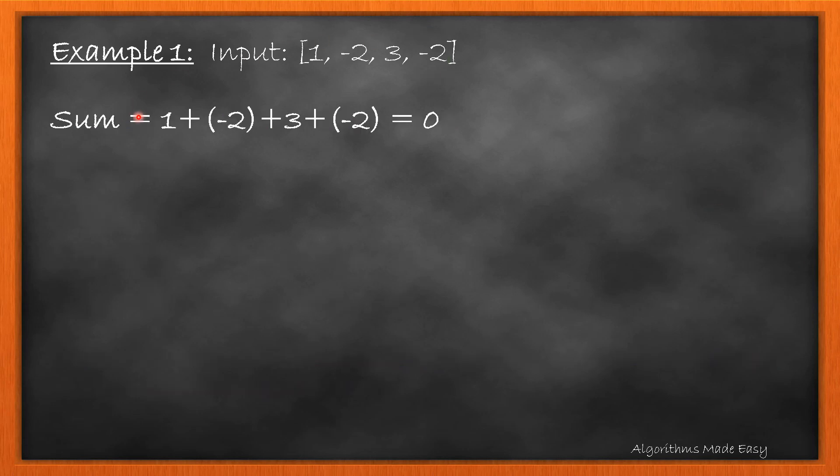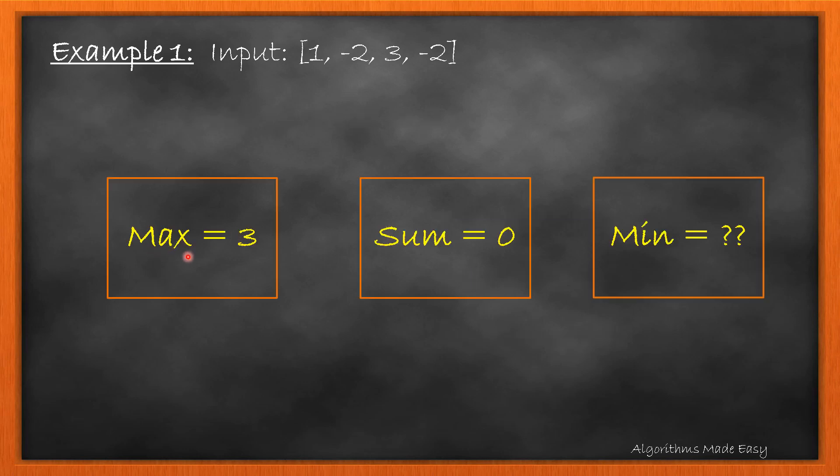Now, let's calculate the sum of the array. For this example, it will be 0. Now, as we have the max and sum, we need to find the min of the array.